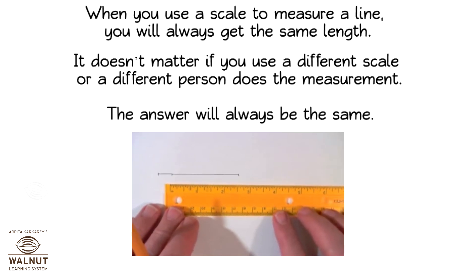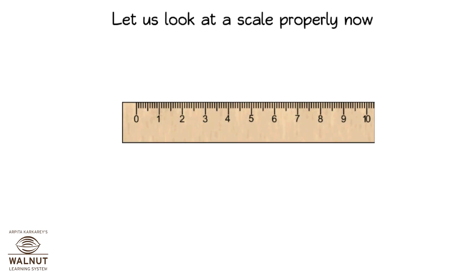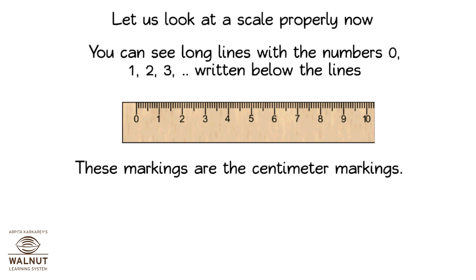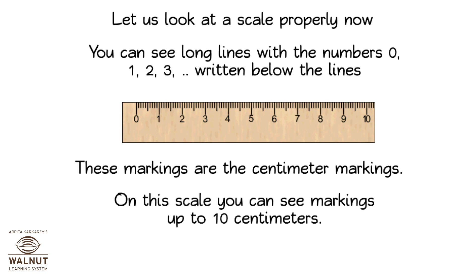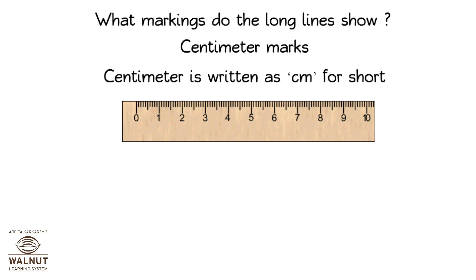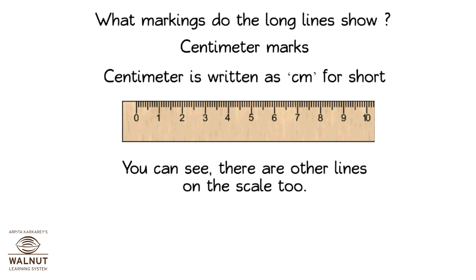Let us look at a scale properly. You can see long lines with numbers zero, one, two, three written below the lines. These markings are the centimeter markings on this scale. You can see markings up to 10 centimeters. The long lines show centimeter marks. Centimeter is written as cm for short. You can see there are other lines on the scale too.